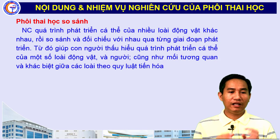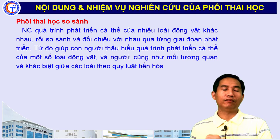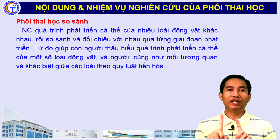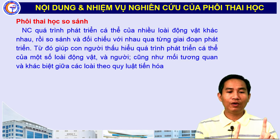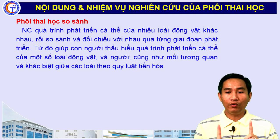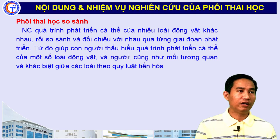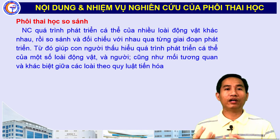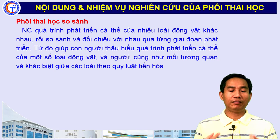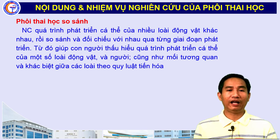Phôi thai học so sánh nghiên cứu quá trình phát triển của nhiều loại động vật khác nhau rồi so sánh, đối chiếu với nhau để tìm ra điểm giống nhau và khác nhau. Qua đó, con người sẽ hiểu được quá trình phát triển cá thể của một số loài động vật và hiểu cơ chế phôi thai học của người, bao gồm sự giống và khác nhau giữa các loài và quy luật tiến hóa.